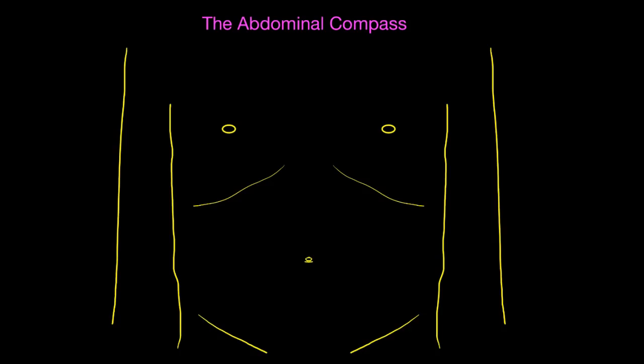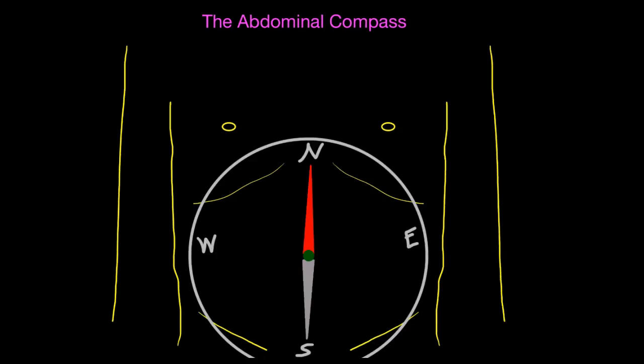We're going to talk about abdominal pain in the physical exam, doing something called the abdominal compass. What you're looking at here is a cartoon of the abdomen. Here are the inguinal canals, here's the umbilicus or belly button, and this is the ribs. This is the patient's arms right here.